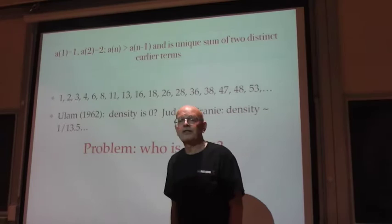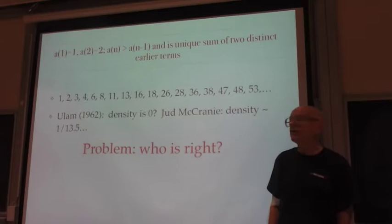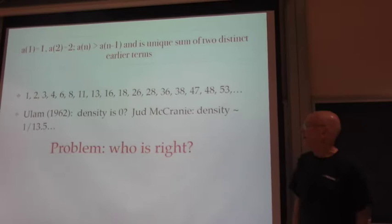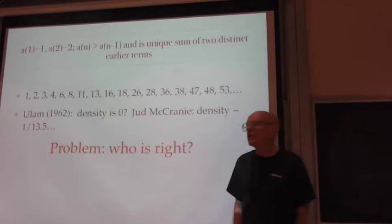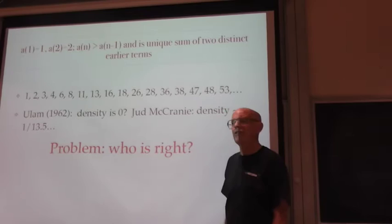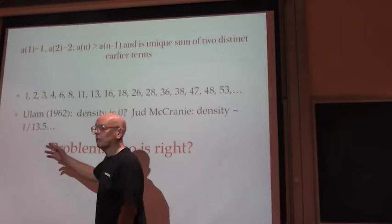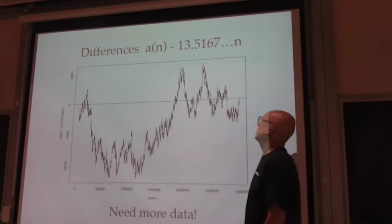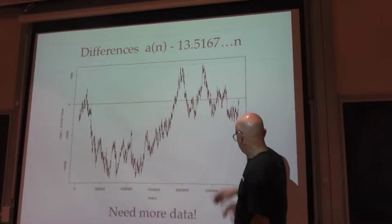Ulam said that he thought it had density zero, that if you look at the number of terms up to N, the fraction goes to zero. On the other hand, one of the regular contributors to the OEIS, Jeff McCraney, looked at about three million terms, and he noticed that it was not going to zero. The number of terms up to N seemed to be about one over 13.5 times N. So they can't both be right. Who was right? If you look at the residuals between A of N and 13.5 times N, after three million terms, it does not seem to be going to zero. So we need more data.